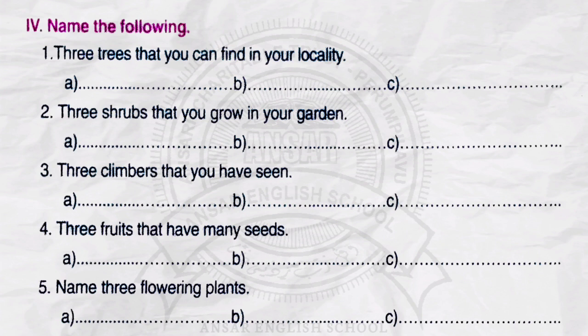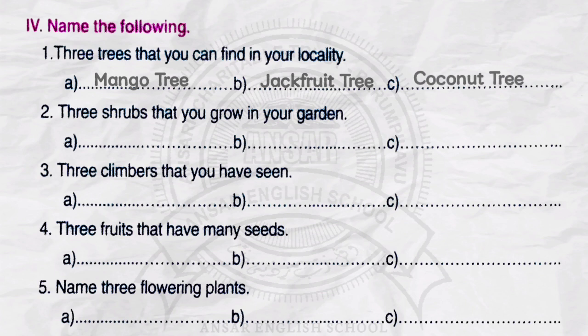Exercise number 4. Name the following. Number 1. Three trees that you can find in your locality. A. Mango tree. B. Jackfruit tree. C. Coconut tree. Number 2. Three plants that you grow in your garden. A. Hibiscus. B. Rose. C. Ixora.